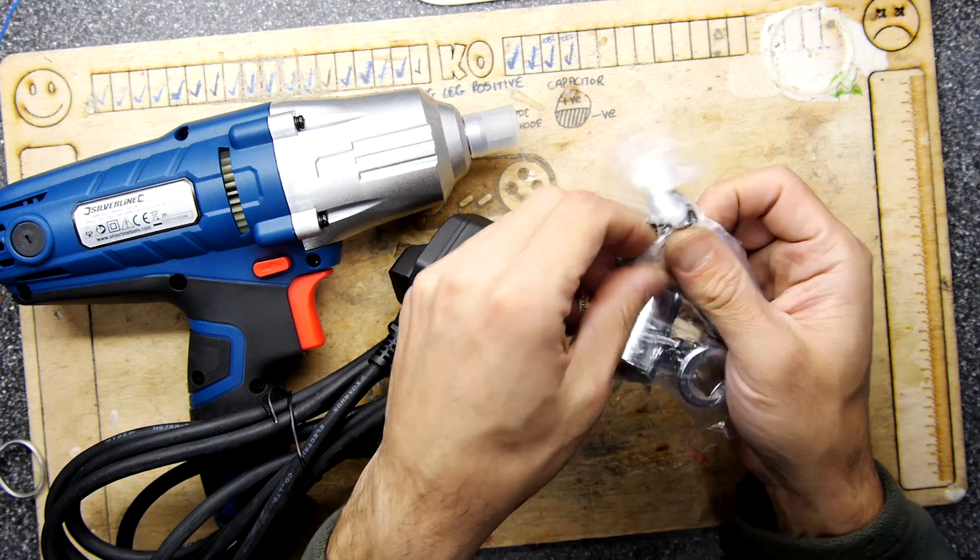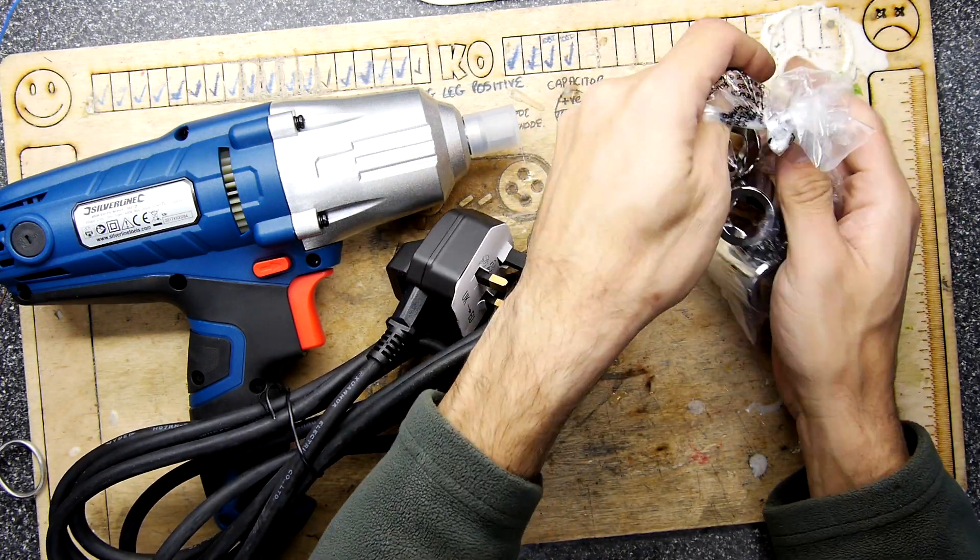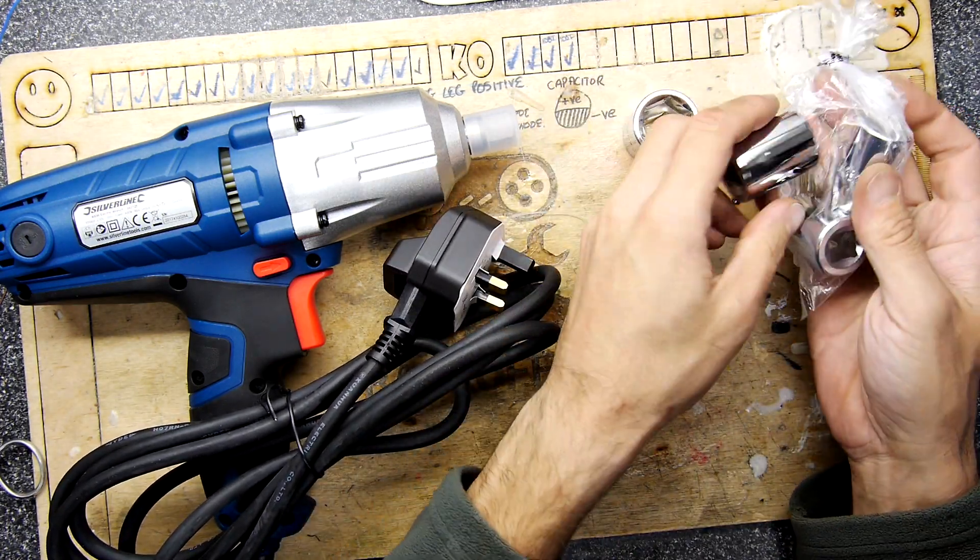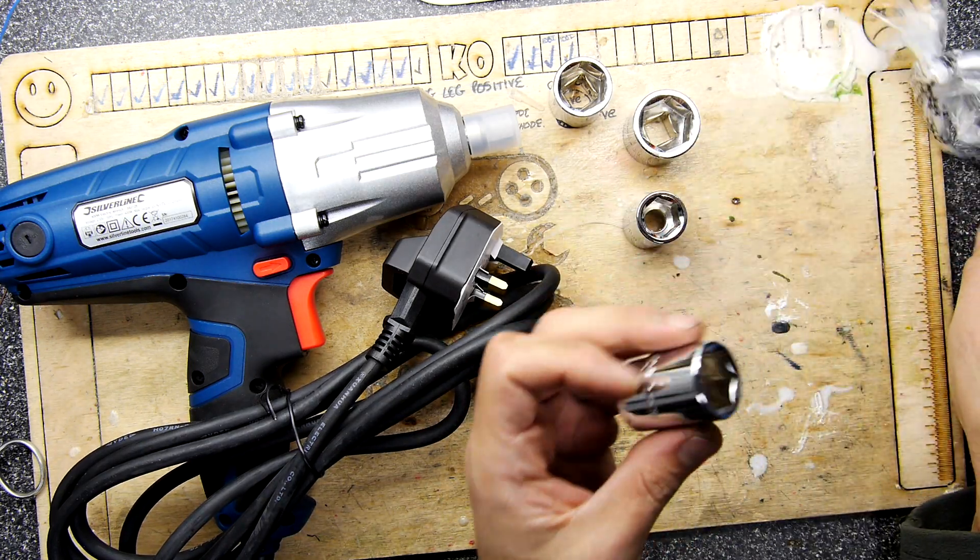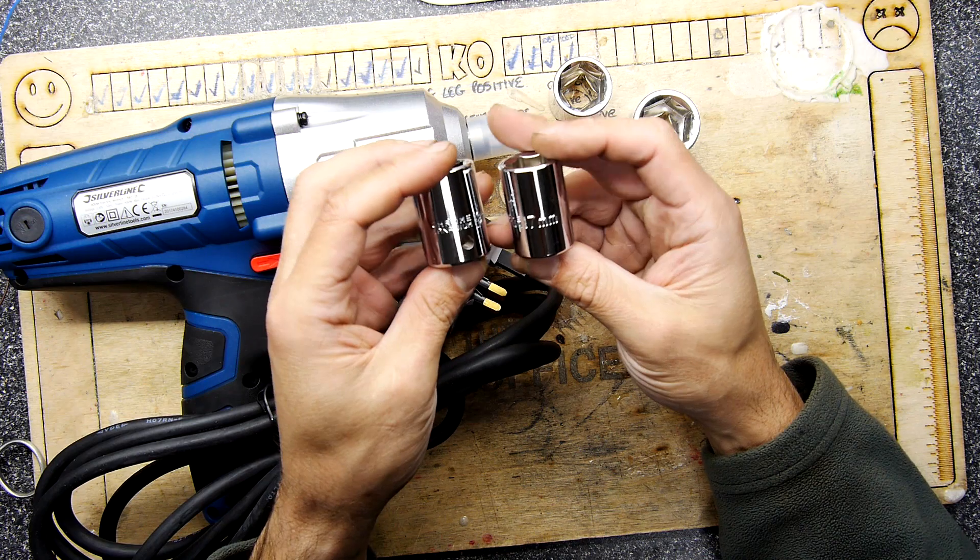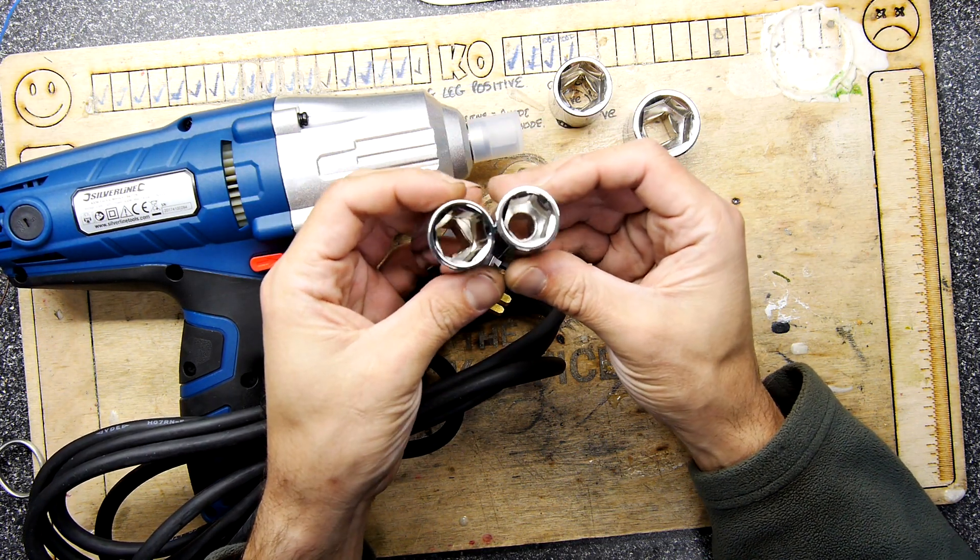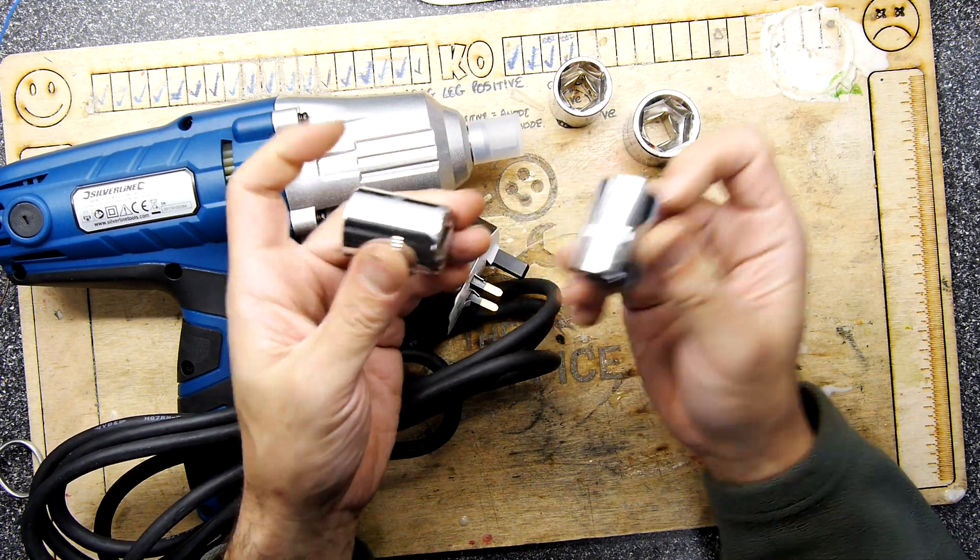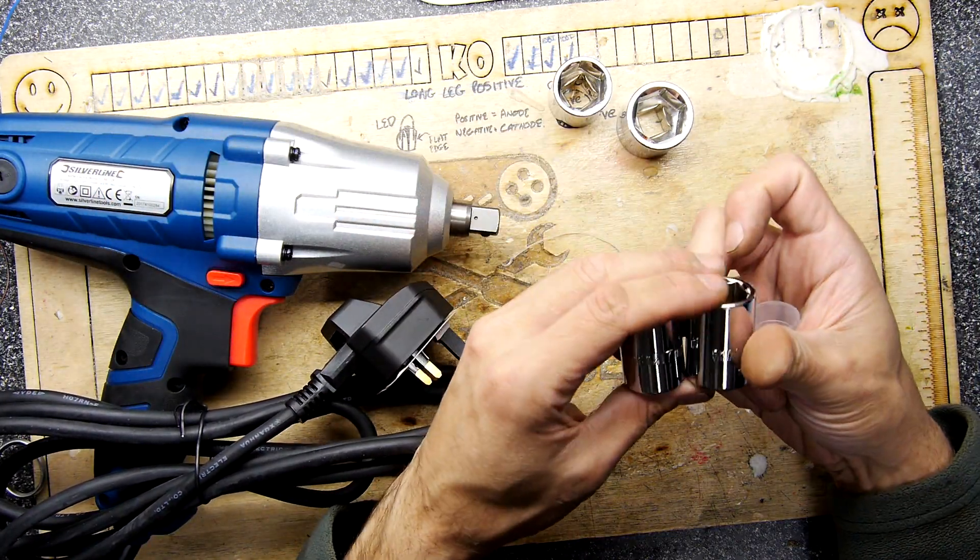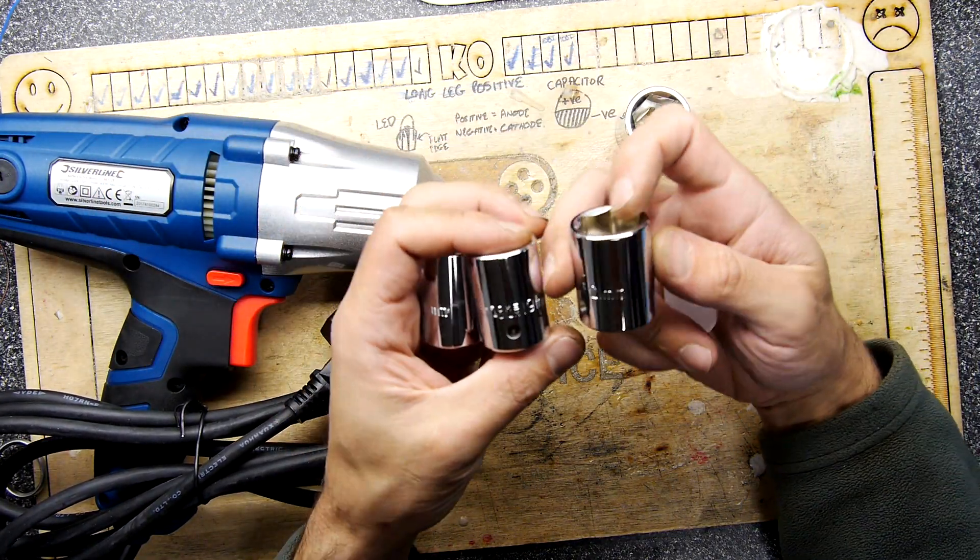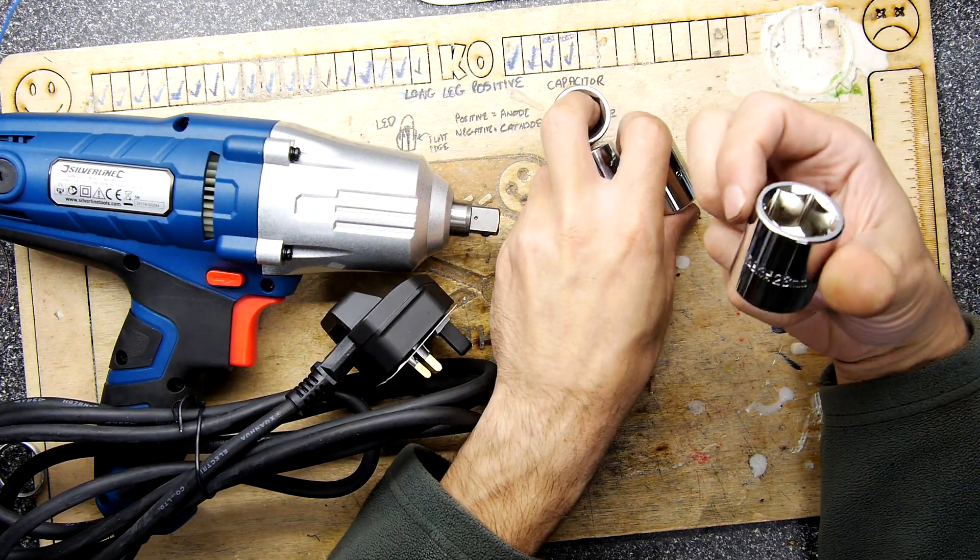Interestingly enough, it does come with some sockets but they're not impact grade, which is peculiar. Well, I'm saying that because they're not black, they're chrome, but they definitely do look kind of impact grade because they're much thicker. Let's see how long those last. What sizes do you get? You get 17, 19, is that 21 and 24 perhaps? No, 23.